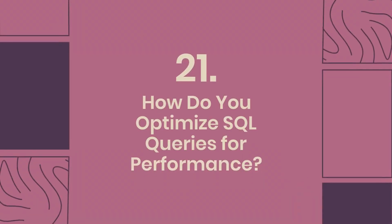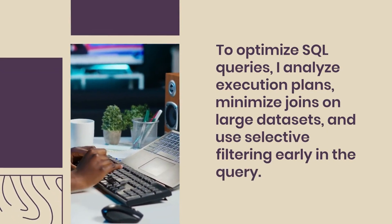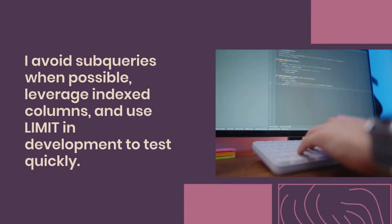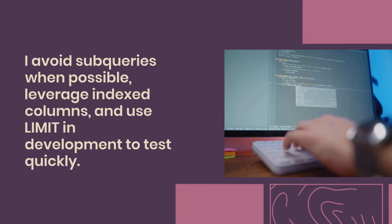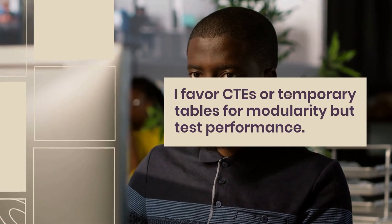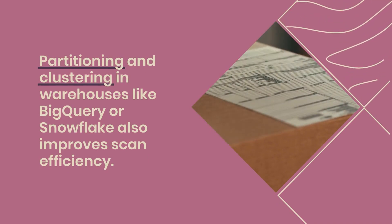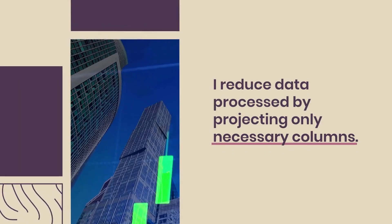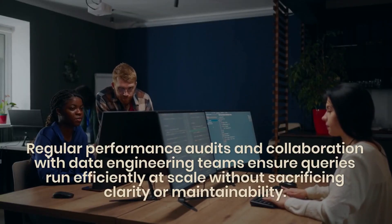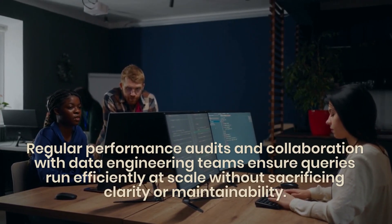Question 21: How do you optimize SQL queries for performance? To optimize SQL queries, I analyze execution plans, minimize joins on large datasets, and use selective filtering early in the query. I avoid subqueries when possible, leverage indexed columns, and use LIMIT in development to test quickly. I favor CTEs or temporary tables for modularity but test performance. Partitioning and clustering in warehouses like BigQuery or Snowflake also improves scan efficiency. I reduce data processed by projecting only necessary columns. Proper denormalization and pre-aggregated models can also enhance performance. Regular performance audits and collaboration with data engineering teams ensure queries run efficiently at scale without sacrificing clarity or maintainability.